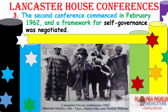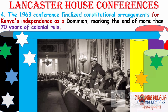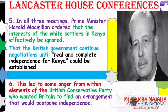The 1963 conference finalized constitutional arrangements for Kenya's independence as a dominion, marking the end of more than 70 years of colonial rule. Kenyatta gave an address — a keynote speech celebrating the Constitution. He was to be Prime Minister for the first government. Prime Minister Harold Macmillan ordered that the interests of the white settlers in Kenya be effectively ignored, and the British government continued negotiations until real and complete independence for Kenya could be established.